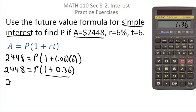Now we have 2448 equals P times 1.36. As I write it down, I'll write it as 1.36P because I'm more used to seeing it that way. You don't have to.